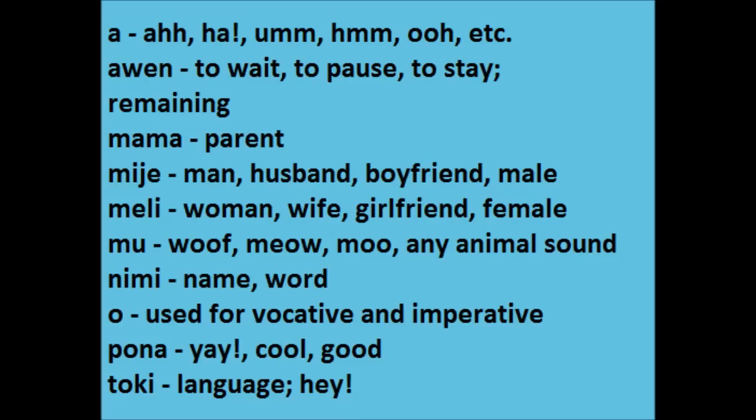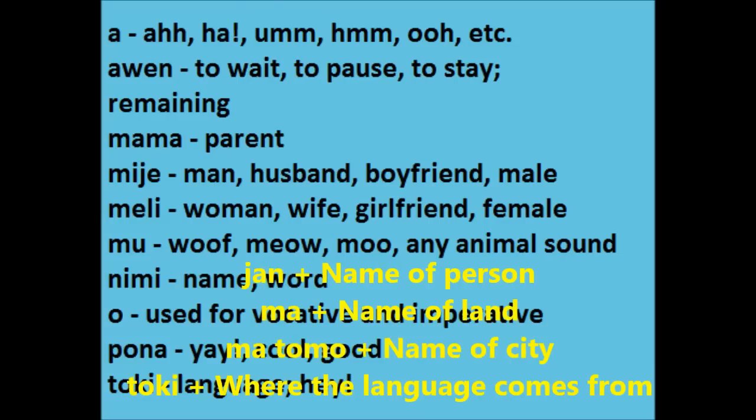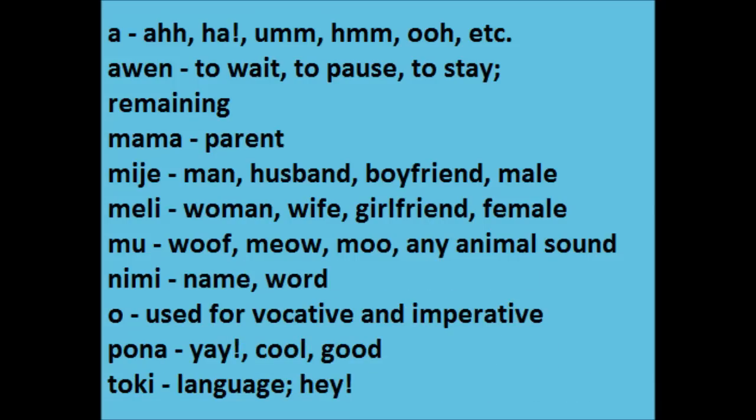Before we say an unofficial name, we put a marker in front of it. If we say a person's name, we say 'jan' then the person's name. If we are talking about a land, we say 'ma' then the land. For a city, it's 'ma tomo' then the name of the city. For a language, it's 'toki' plus where the language comes from. I'll put up a list of unofficial words on the practice page.